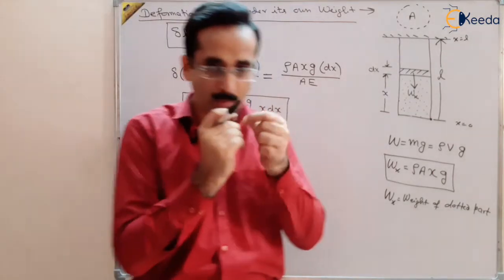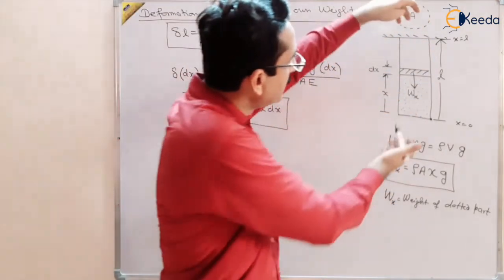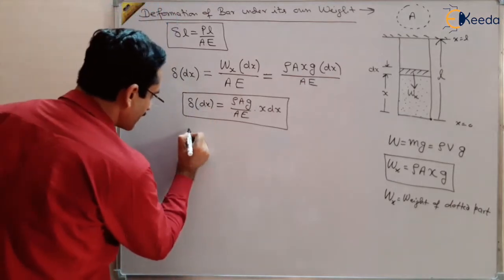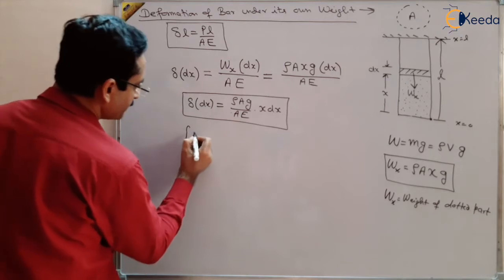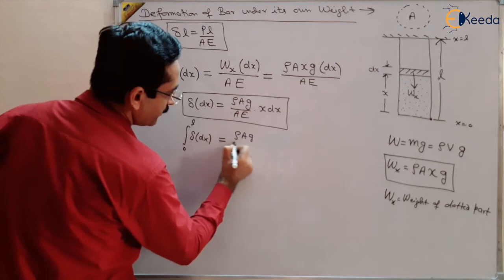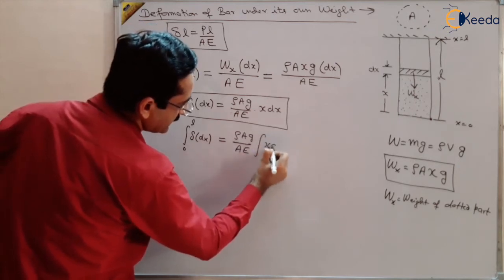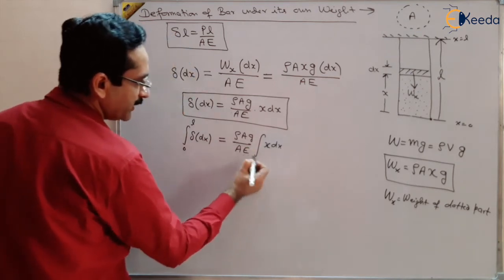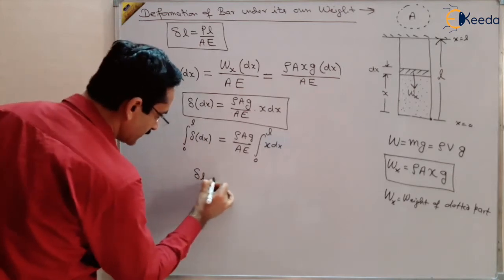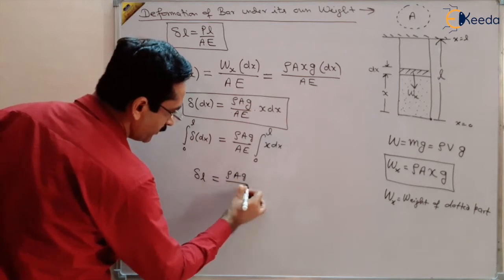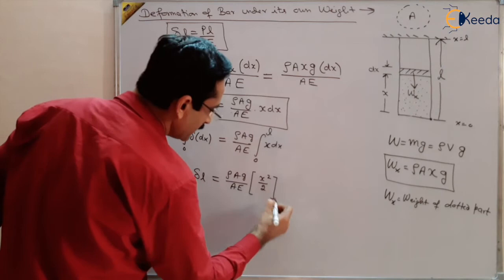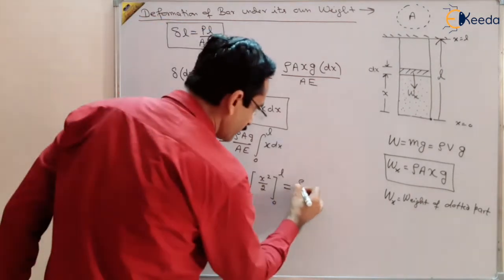These small deformations are added up to get the total deformation in the bar from 0 to L. Integrating δ(dx) from 0 to L, we get δL = (ρAg / AE) × ∫₀ᴸ x dx. The constants ρAg/AE are taken outside the integral, and integrating x dx gives x²/2. Evaluating from 0 to L gives δL = (ρAg / AE) × L²/2.